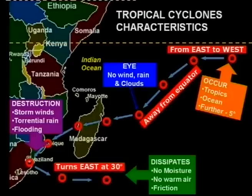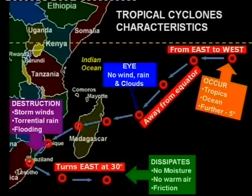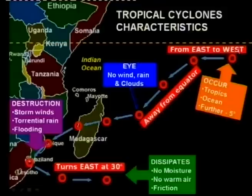As the tropical cyclone hits 30 degrees it turns back towards the east and then it will dissipate — because there is no moisture, no warm air, and because of friction. On the diagram in orange we show where tropical cyclones are found, because they need warm air and warm water. That is why tropical cyclones are found around summer time and just after summer. The three movements to remember are: east to west, away from the equator, and turning east at 30 degrees.